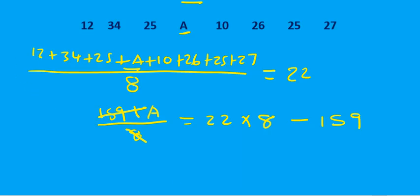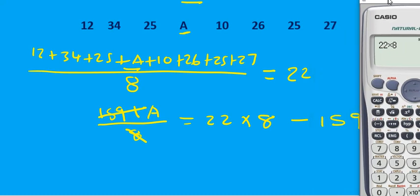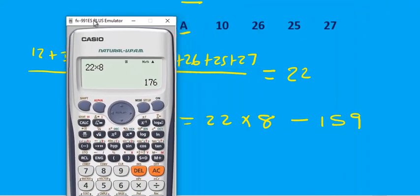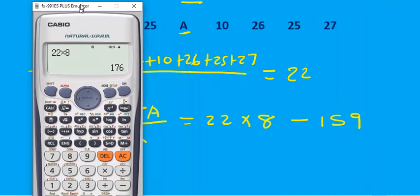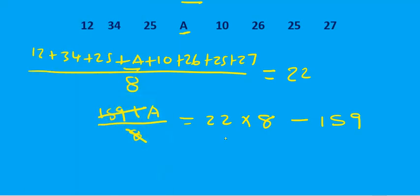Let me just go to the calculator to work that out. So 22 times 8 is equal to 176, minus 159. So then the value of A will be 17. So the value of A is equal to 17. That's how you do inverse questions.